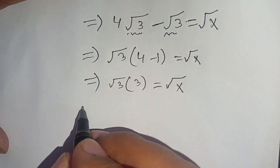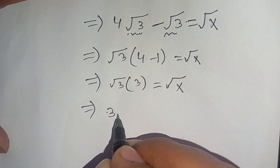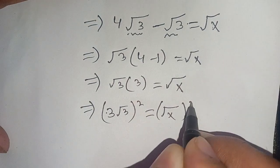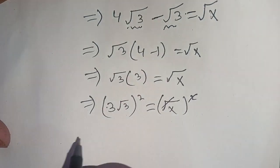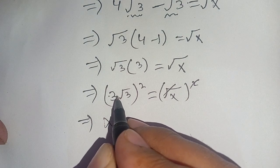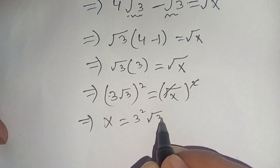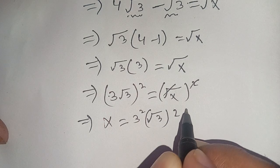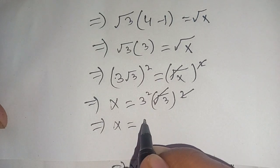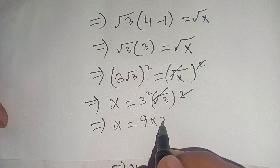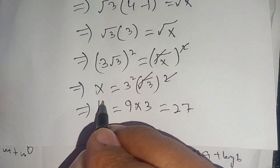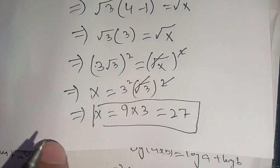Squaring both sides, we get 3 square root of 3, whole power 2, is equal to square root of x, whole power 2. We cancel the square and square root on the right side, giving x equals 3 power 2 times square root of 3, whole power 2, which simplifies to 9 times 3, which equals 27. Thus the value of x is equal to 27, which satisfies our given equation.